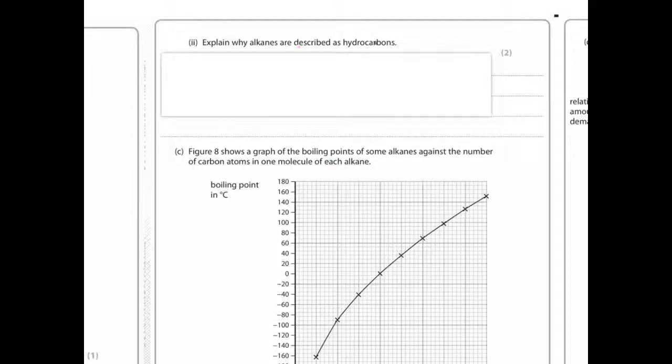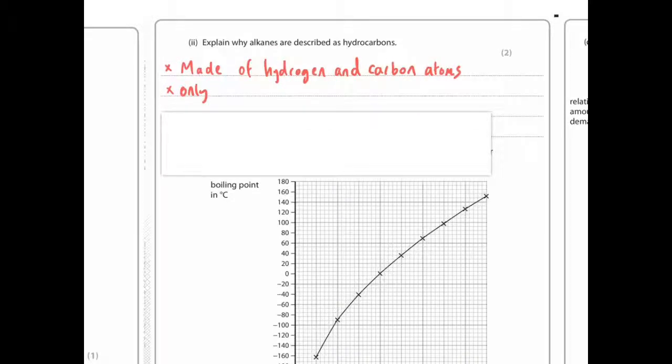Explain why alkanes are described as hydrocarbons. If you have to ever define a hydrocarbon, it's because they are made of hydrogen and carbon atoms, and you get the second mark for saying only. So if you had chlorine or oxygen or anything like that added in, it's no longer a hydrocarbon. So remember that second mark for only.